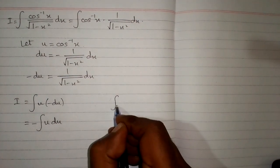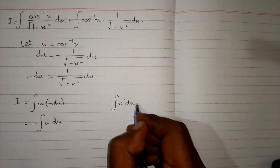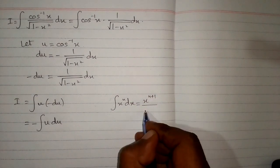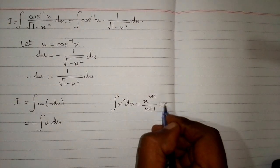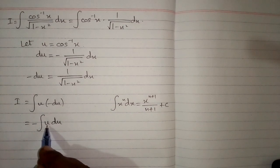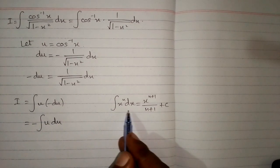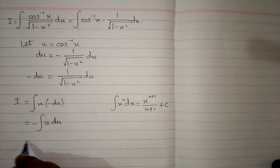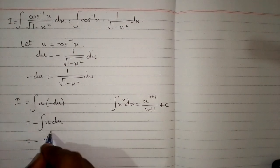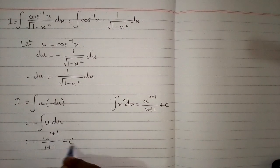Now we know that the integral of x to the power n is x to the power n plus 1 upon n plus 1, plus c. So here the power of u is 1, and applying the power rule of integration, we have minus u raised to the power 1 plus 1 upon 1 plus 1, plus c.